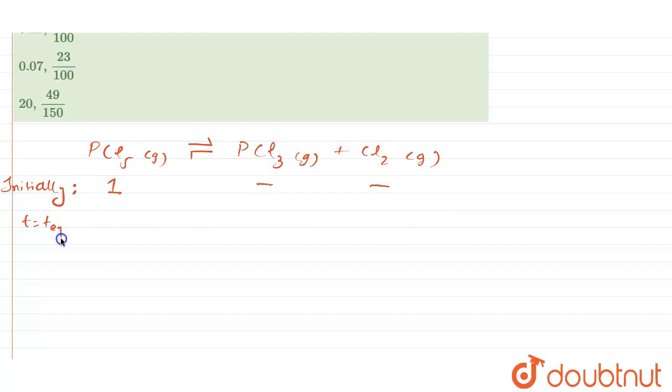0.3 means if you see, 1 minus x is equal to 0.3 moles. We have 0.3 moles of PCl5, so it can be said that x value is equal to 1 minus 0.3, that will be equal to 0.7.